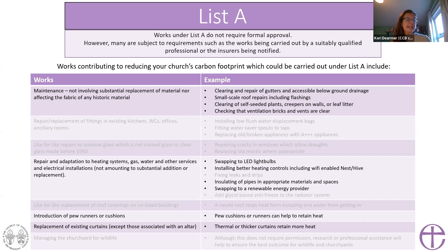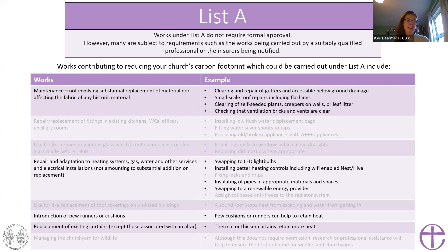You can repair or adapt your heating system, gas, water, and electrical services and installations. For example, you can swap to LED light bulbs without any permission, install better heating controls including Wi-Fi-enabled Nest or Hive systems, insulate pipes in appropriate materials and spaces such as a boiler room, and swap to a renewable energy provider — which makes a huge impact on your carbon footprint.